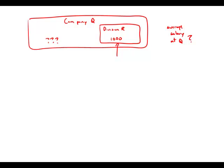Statement one tells us simply that within Division R we have an average salary of thirty thousand. That's interesting — we know the average inside of Division R, but outside of Division R we have no idea how many employees there are and we have no idea what they make. So this statement by itself is simply insufficient.